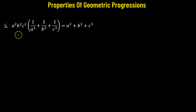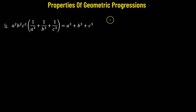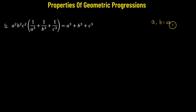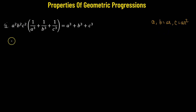This is another problem. We need to show that the following expression is true, and a, b, and c are still in geometric progression. That means we have the first term a, b equals a r, and c equals a r squared. So these three numbers are in geometric progression.